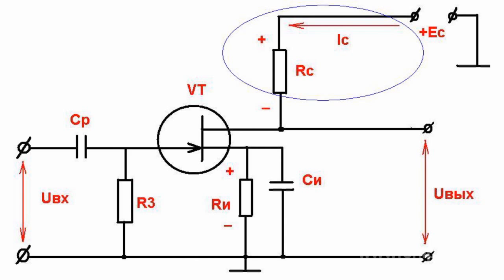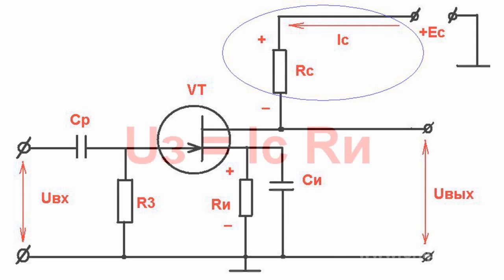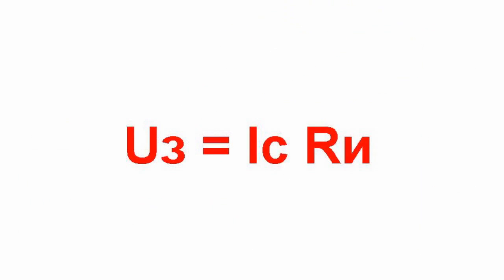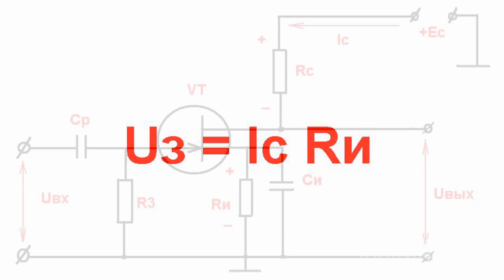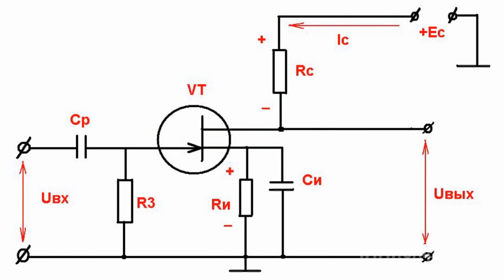The voltage at the transistor's gate is provided by the same drain current running through the resistor in the source circuit. As a result, the voltage at the gate equals the drain current multiplied by the resistance of the resistor in the source circuit. This voltage is applied to the gate through resistor R3 with the corresponding polarity.